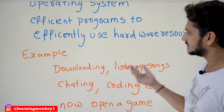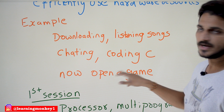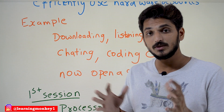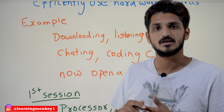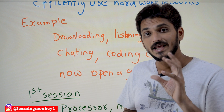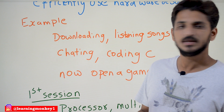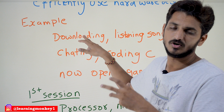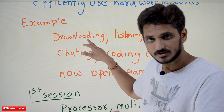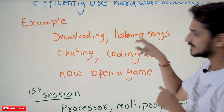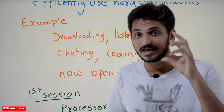Let's understand with an example. Suppose you are downloading a video, listening to music, doing chatting, doing coding, and you opened a new game — so many programs are running in the system simultaneously. Whose responsibility is it to decide which program executes next in the processor? This is the responsibility of the operating system. It manages where a downloading video is saved, at what memory location, how much has been downloaded, and where songs are stored in memory.